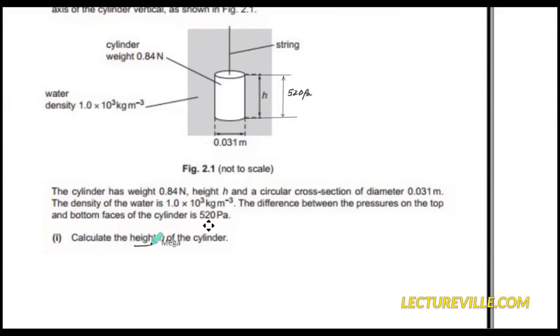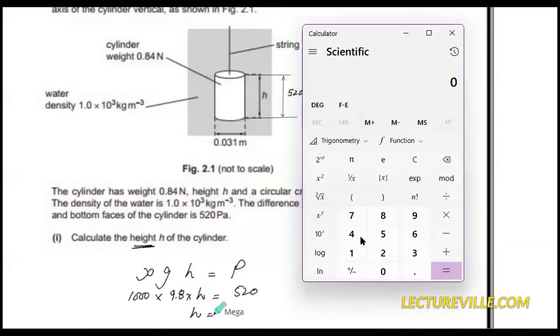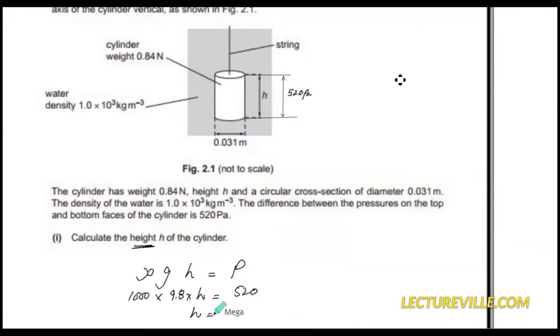Now the question is we have to calculate the height. So rho g h equals to pressure: 1000 into gravitational acceleration 9.8 into the unknown height equals to 520 pascals. So h equals to 520 divided by 1000 divided by 9.8. Here we get 0.053 meters.